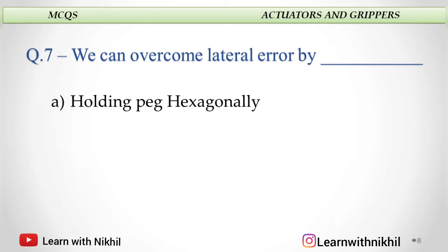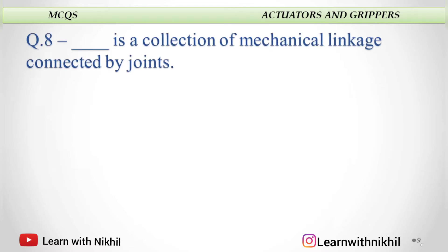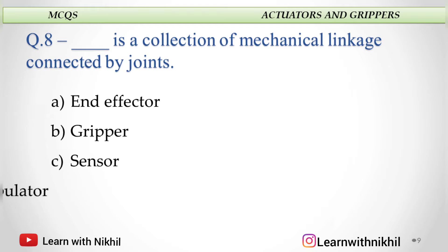We can overcome lateral error by: A. Holding peg hexagonally, B. Polyhedral method, C. Deburring, or D. Chamfering? And the answer is chamfering. Dash is the collection of mechanical linkage connected by joints: End effector, gripper, sensor, or manipulator? And the answer is manipulator.